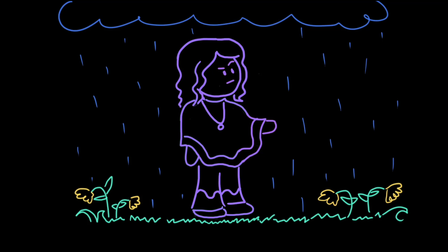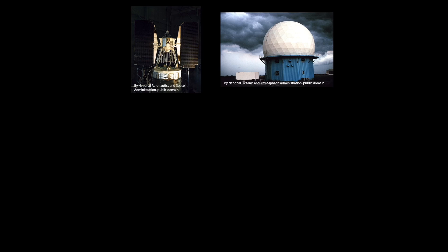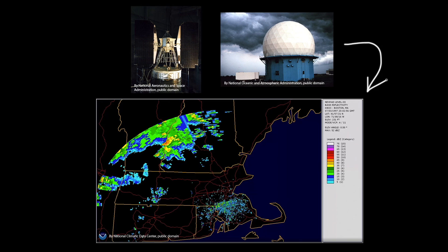Weather is so complex that it can be difficult to predict what will happen next. Luckily, scientists have developed technologies that help model weather patterns, so we can all make more informed choices about what to expect when we go outside. To do that, they set up tools like satellites and Doppler radar to observe atmospheric conditions such as wind speed, temperature, air pressure, and nearby geographic features. They can input the data they record into computer models, which can use that information to predict future weather.